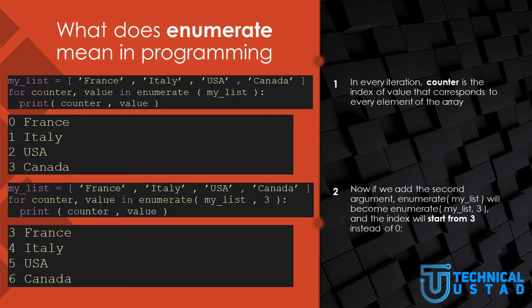What does Enumerate mean in programming? In this example, we create a list called myList that contains 4 strings. Then a for loop iterates over the Enumerate object created from this list. In every iteration, the counter is the index of the value that corresponds to every element of the array. When running the script, the following result is displayed: 0 France, 1 Italy, and so on.